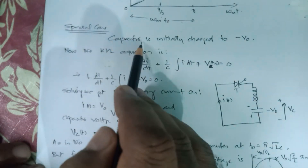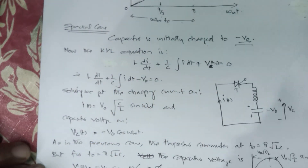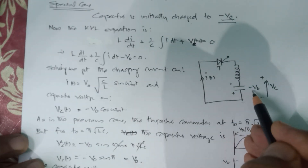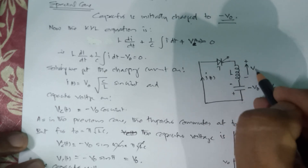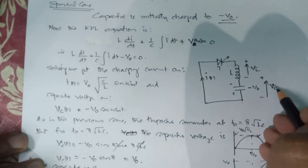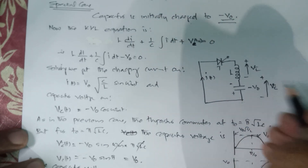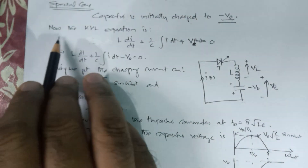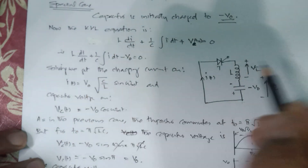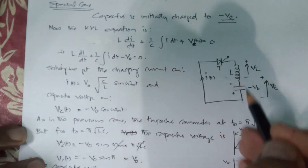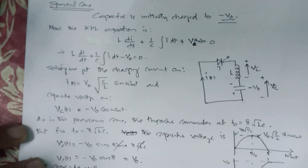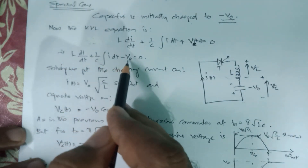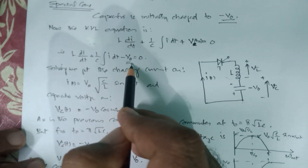We also need to study a special case where the capacitor voltage is not initially 0. The capacitor is initially charged to a voltage −V0, as represented in this figure. Using the KVL, we have: L·di/dt plus (1/C)∫i dt plus Vc(t=0) equals 0, since there is no source. This is modified as L·di/dt plus (1/C)∫i dt − V0 equals 0, where −V0 was the initial voltage across the capacitor.